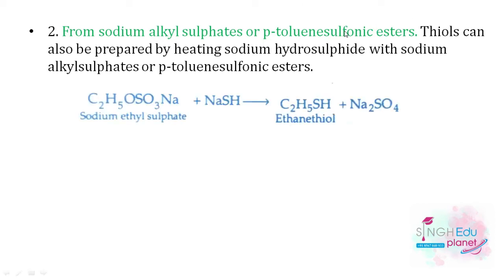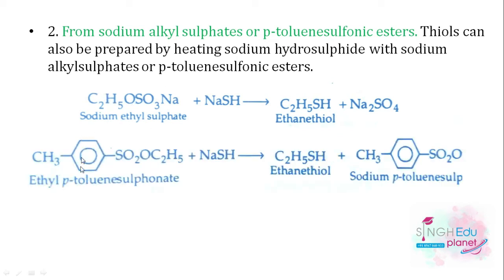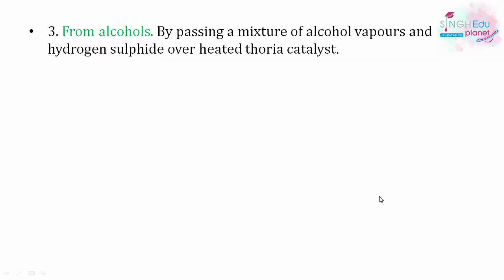Second method: from sodium alkyl sulfonates or paratoluenesulfonic esters. Thiols can be prepared by heating sodium hydrosulfide with sodium alkyl sulfates — for example, sodium ethyl sulfate — to make ethyl thiol. Similarly, reacting ethyl paratoluenesulfonate with sodium hydrosulfide also gives ethyl thiol, with a side product formed separately.